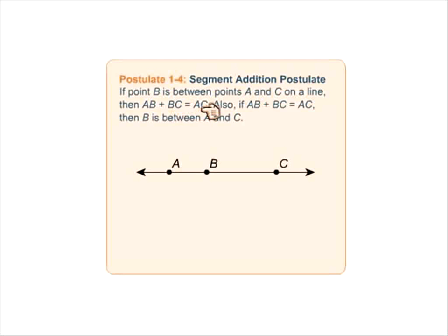So AB plus BC equals AC. And also, if AB plus BC is equal to AC, then we know B is in between those two lines.